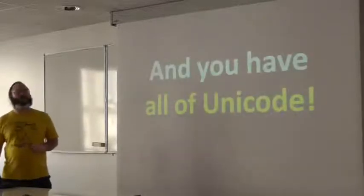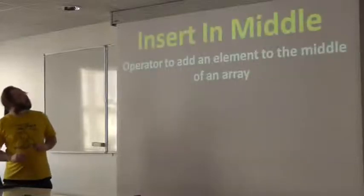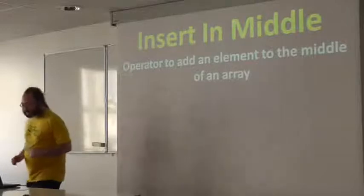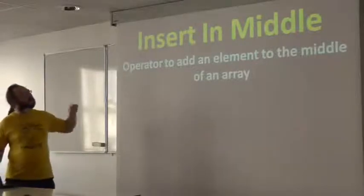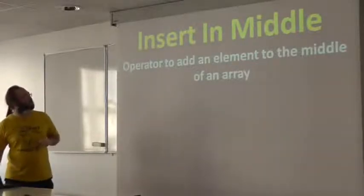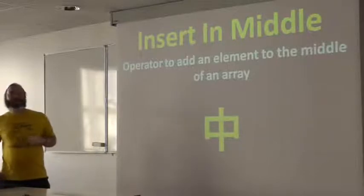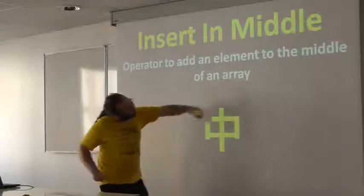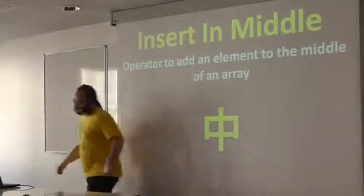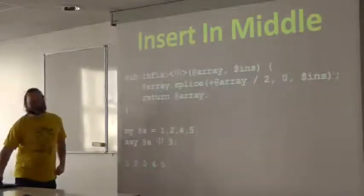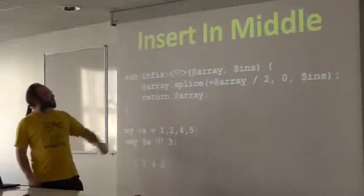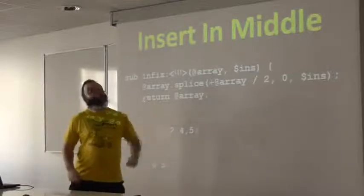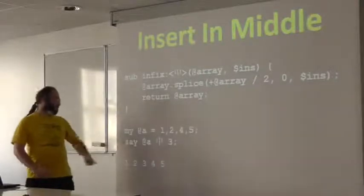And you have all of Unicode. So I want to insert an element in the middle of an array. What do I do? Well, let's go and find the Chinese character for middle, which sort of looks like a thingy being shoved in the middle. There we go. I take my array. I take the thing I want to insert. And we just splice it in halfway through. There we go.